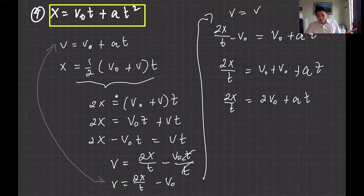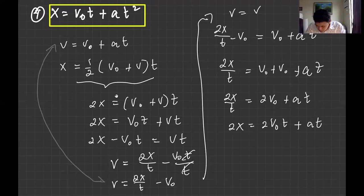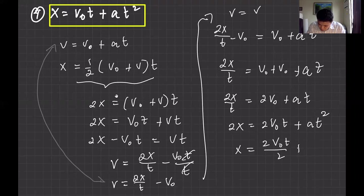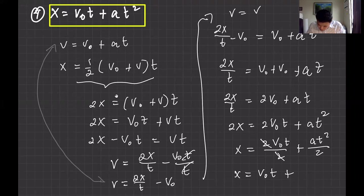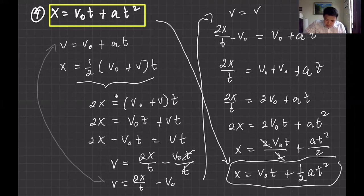Dividing both sides by 2: x equals v-naught·t plus one-half·a·t². This is kinematic equation number four. So we have now derived all four kinematics equations from first principles using the definitions of acceleration and velocity.